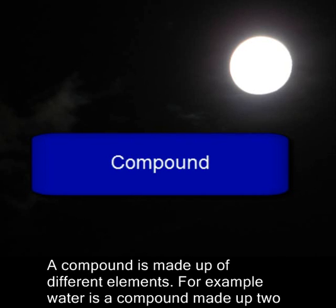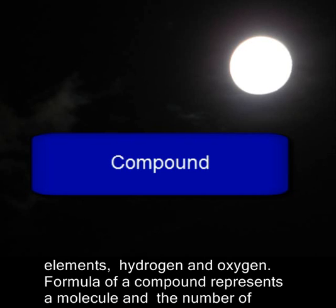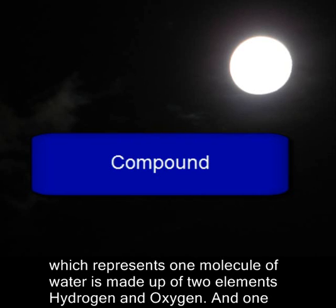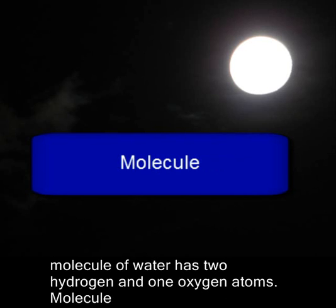Compound. A compound is made up of different elements. For example, water is a compound made up of two elements, hydrogen and oxygen. Water is represented as H2O, which represents that one molecule of water is made up of two elements, hydrogen and oxygen. One molecule of water has two hydrogen and one oxygen atoms.